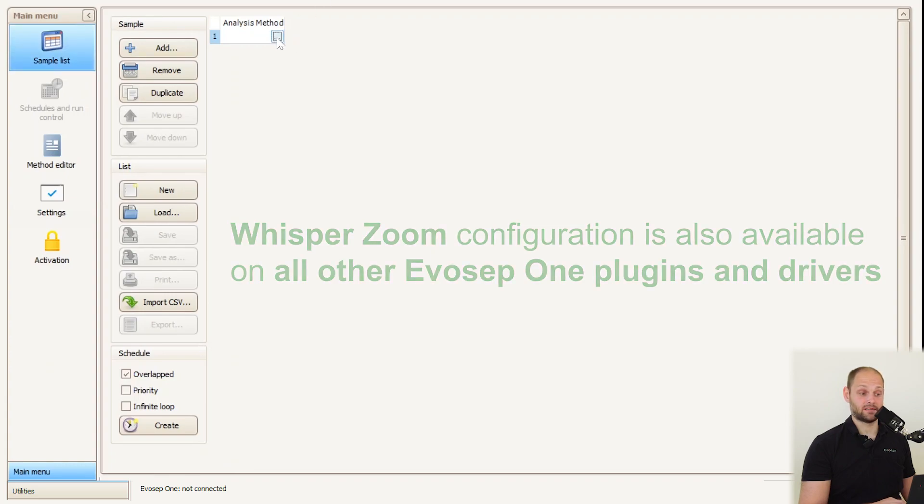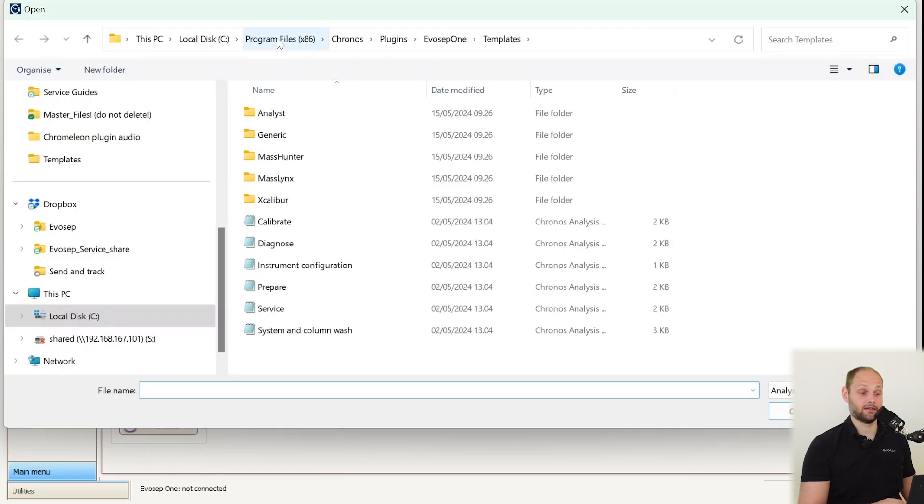Within this tab we can select methods, and the method we're interested in is the instrument configuration method. This method allows us to check the current configuration of the system but also allows us to change it to the zoom configuration.